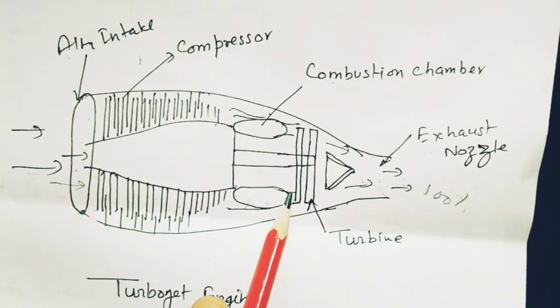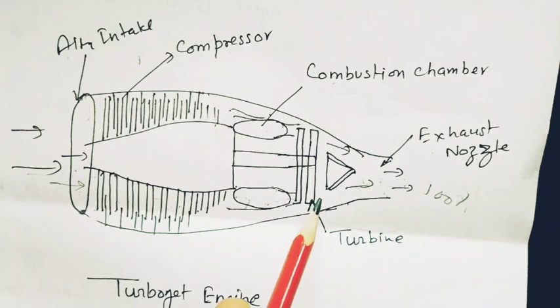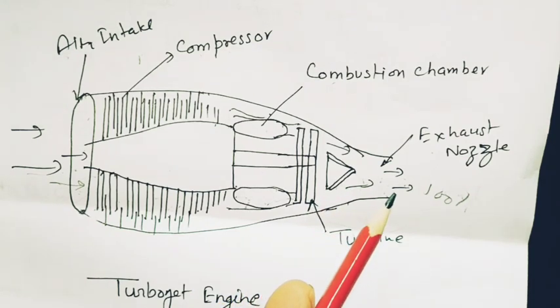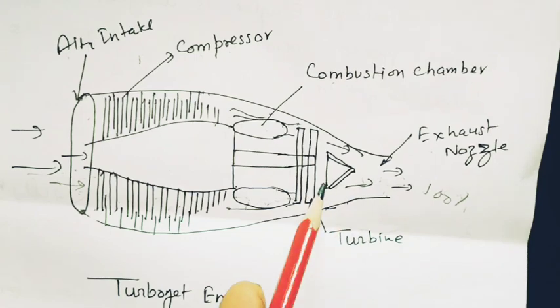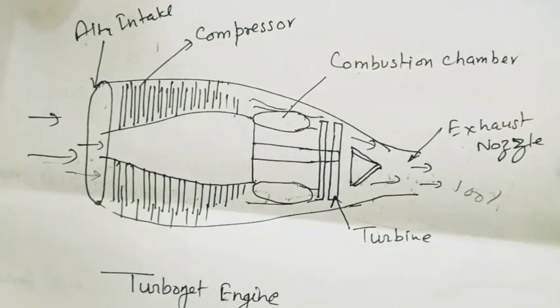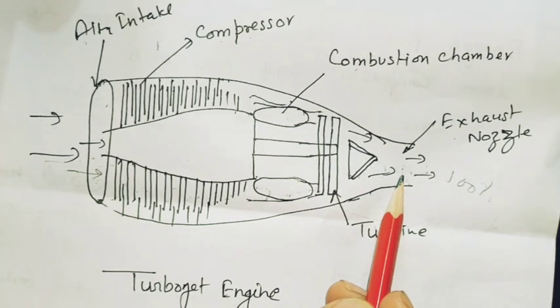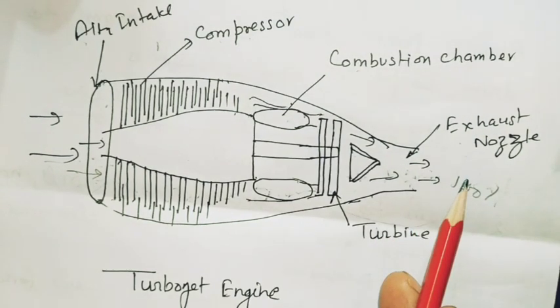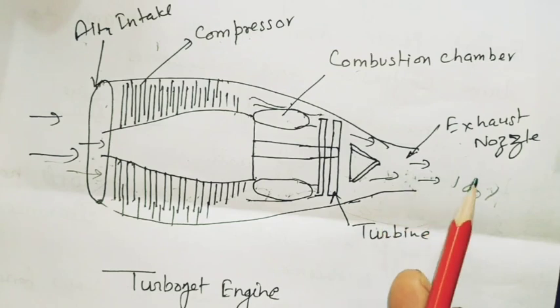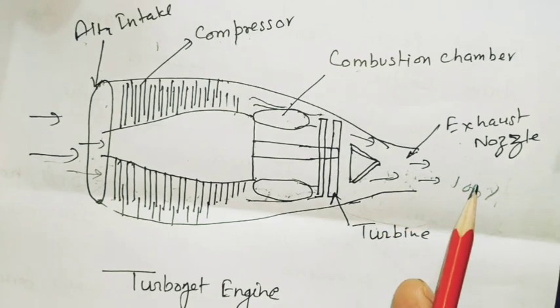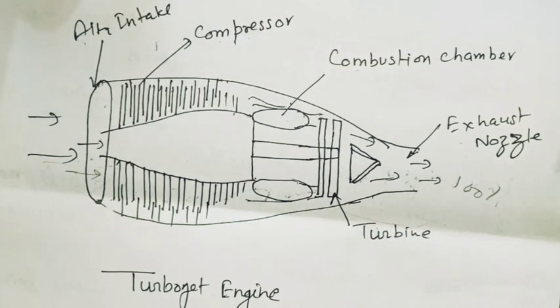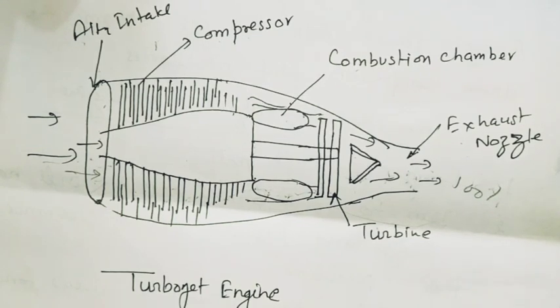Then this gas will come out from the turbine and go to the exhaust nozzle via exhaust cone. Gas will go through the exhaust nozzle, giving reaction thrust by which the aircraft moves forward. So this is all about turbojet engine operation. I hope you understand.